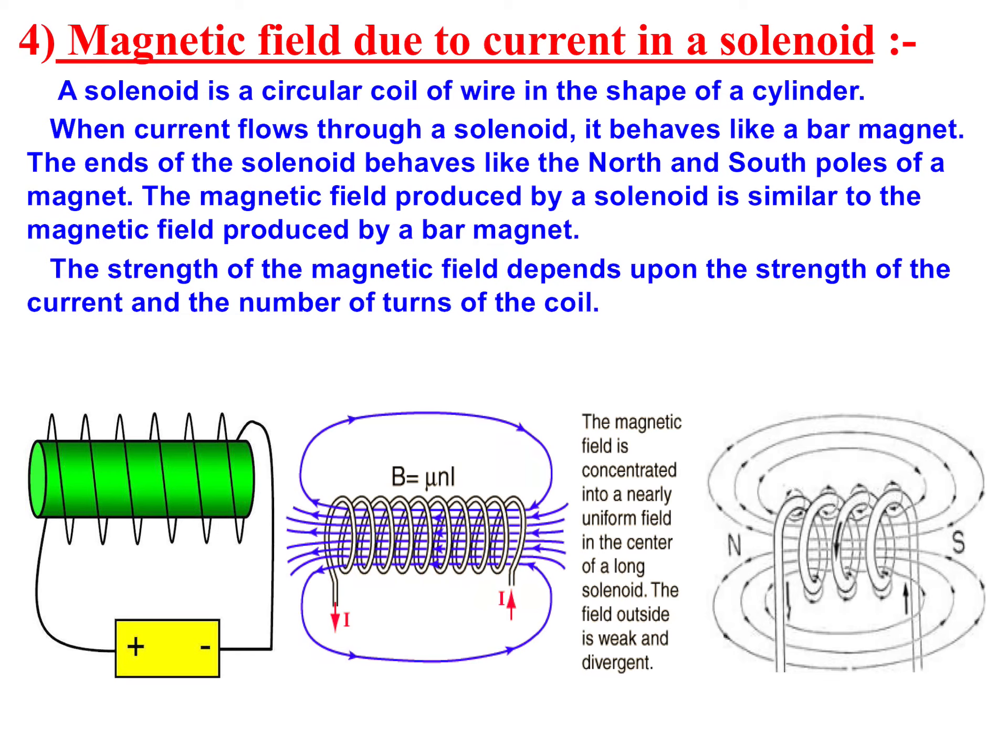We have discussed bar magnets, straight current-carrying conductors, and a conductor bent in the form of a circular coil. First we studied magnetic fields, then a circular loop.